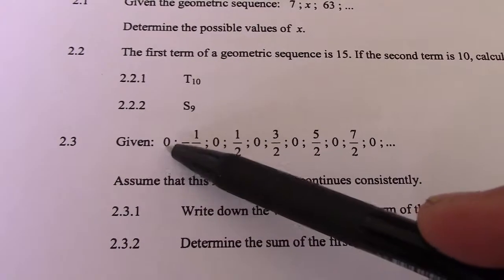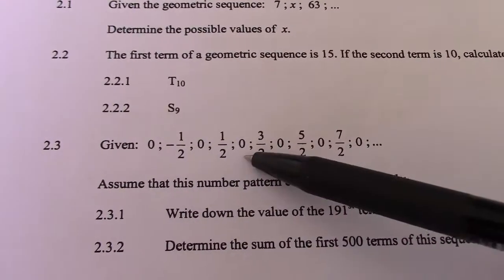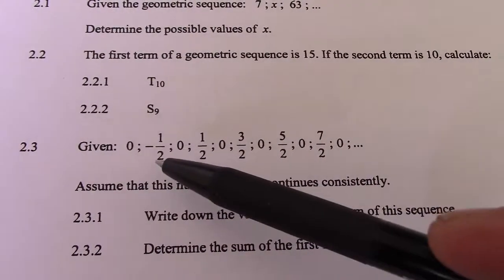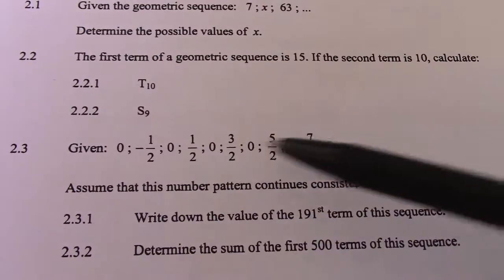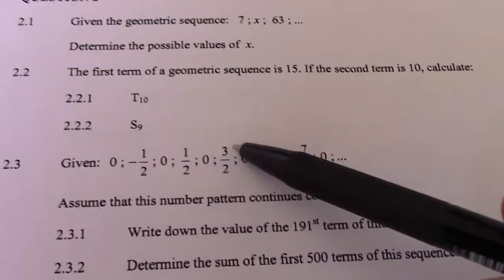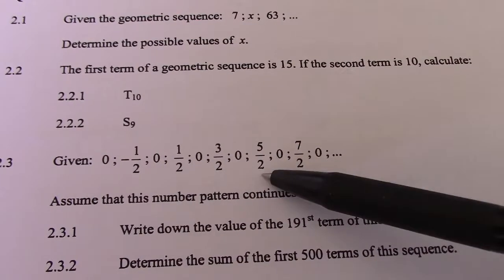You should see every odd number term 1, term 3, term 5, term 7, they're all 0. And all my even numbers form a sequence: that's minus half, plus 1 would give me half, plus 1 would give me 3 over 2, plus 1, 5 over 2.